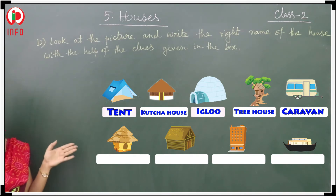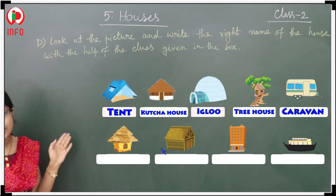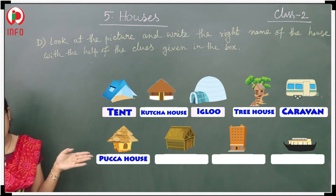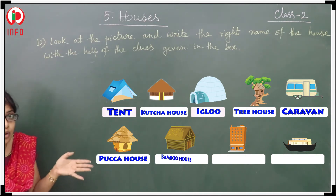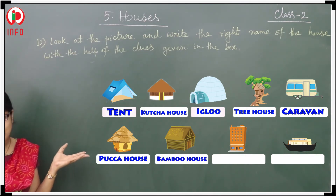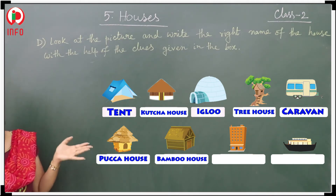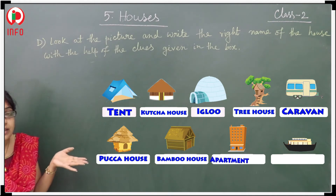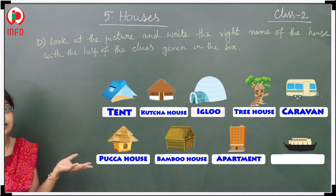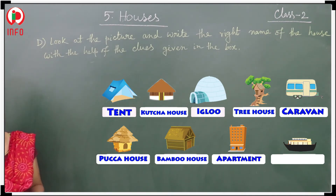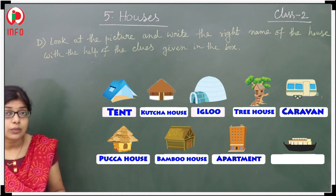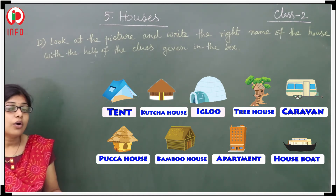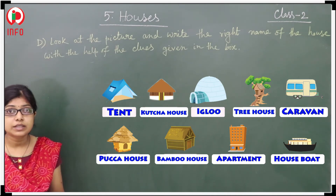In the bottom row: the first one is the kutcha house, next is the bamboo house — that one is made of bamboo. After that is the apartment — there are many flats there. And the last one is the houseboat. All the things are completed.